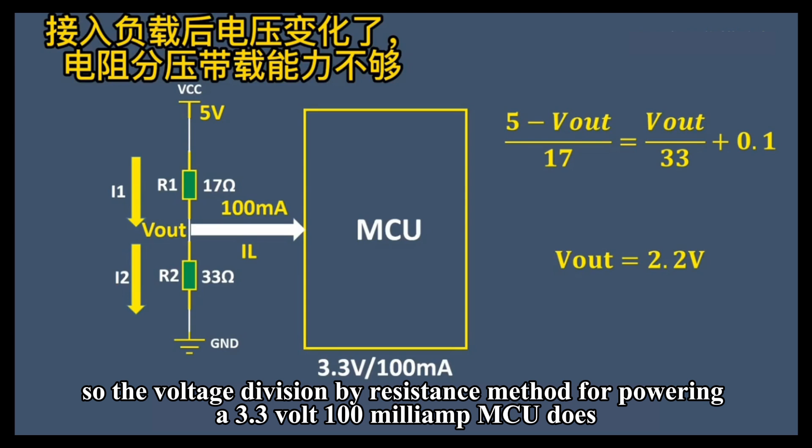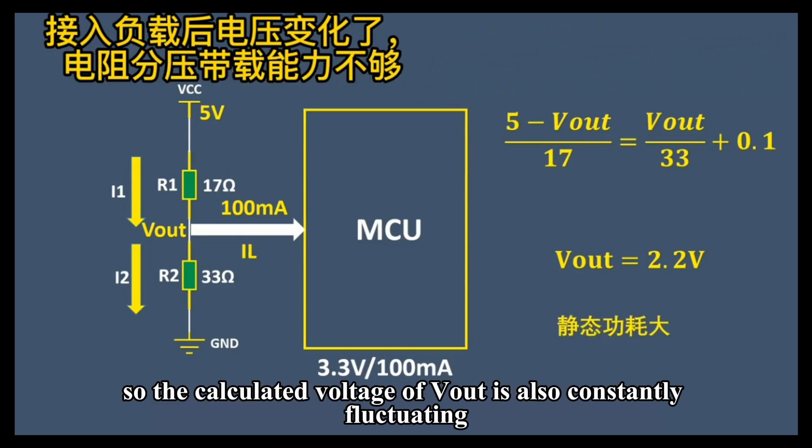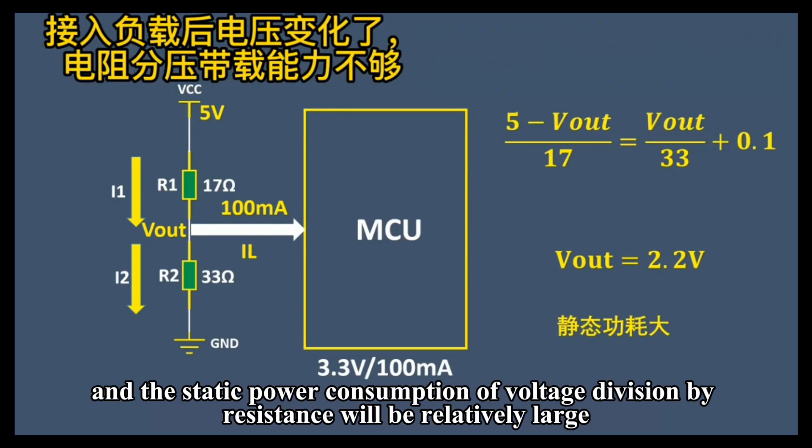So the voltage division by resistance method for powering a 3.3 volt 100 milliamp MCU does not work. IL often is not a constant current, but a changing current, so the calculated voltage of Vout is also constantly fluctuating, and the static power consumption of voltage division by resistance will be relatively large.